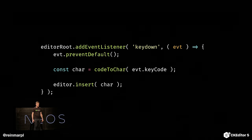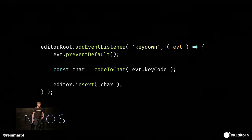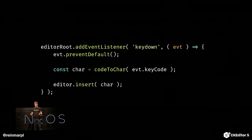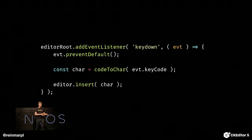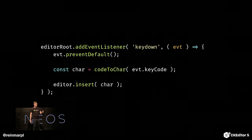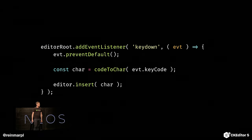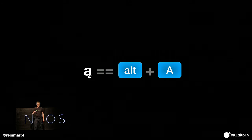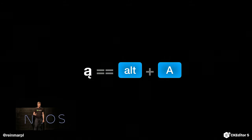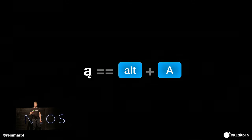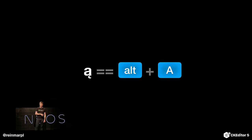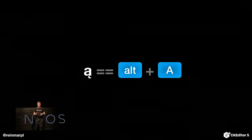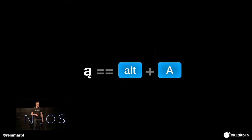First of all, you need to handle typing. We listen to keydown again, prevent default these events — telling the browser 'I will handle this change, don't change the DOM' — and then translate the key code to a character and insert that character into your editor. Simple. But then in some languages like Polish, to type a character you have to press two keys. And this is becoming tricky, because you don't know the keyboard layout the user has, and even if you did, you'd have to implement all the mappings for all keys and all keyboard layouts.